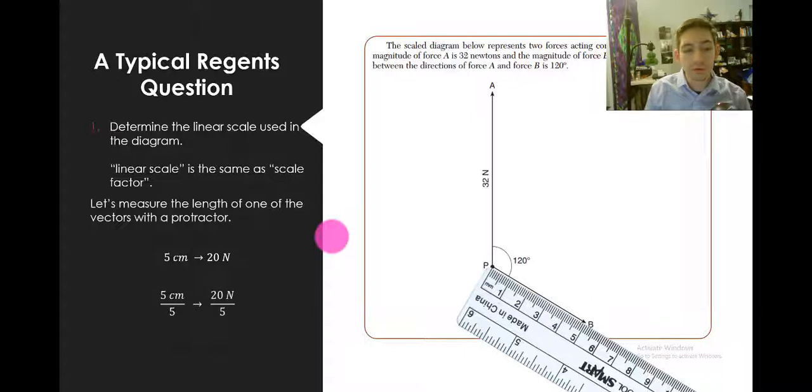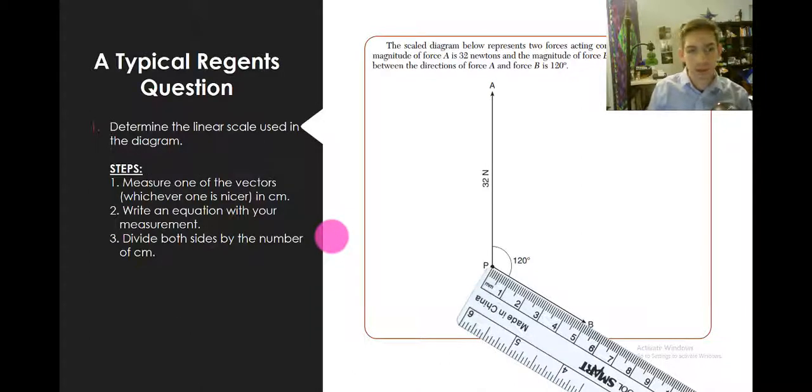And then we'll divide by that 5 because we want 1 centimeter. How much is 1 centimeter? Well, if 5 centimeters is 20 newtons, then 1 centimeter would represent 4 newtons. So the steps for this are to measure one of the vectors. Again, it shouldn't matter which one. We should get the same answer either way. Write an equation with your measurement and then divide both sides by the number of centimeters.